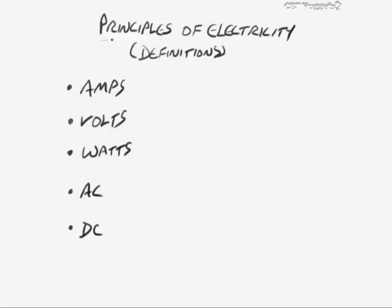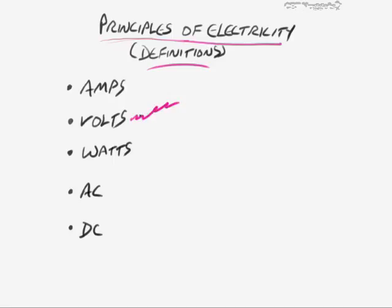Let's get started talking about some of the main principles of electricity and the main definitions you might see. You may have seen all or some of these terms on various devices, and although I don't think you need to memorize these for the A+ exam, they will help you get a general comprehension of what you need to understand specifically as it relates to power supplies and things like UPSs. Most people are familiar with warning signs like '50,000 volts – do not enter.'